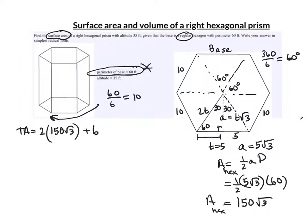And there are 6 rectangles. We figured out that the base of each rectangle was 10 right here. 10, 10, all the way around.